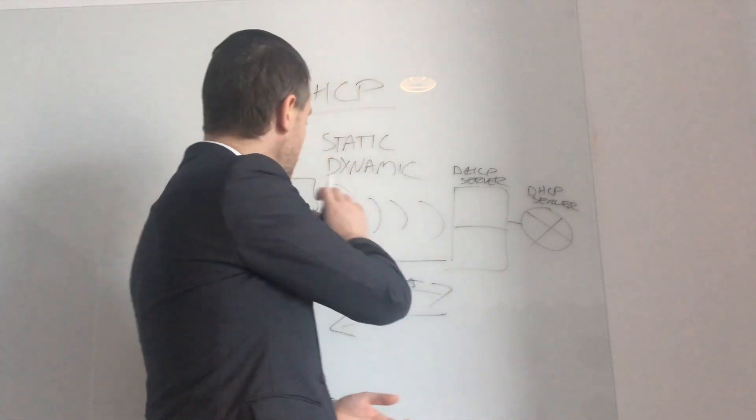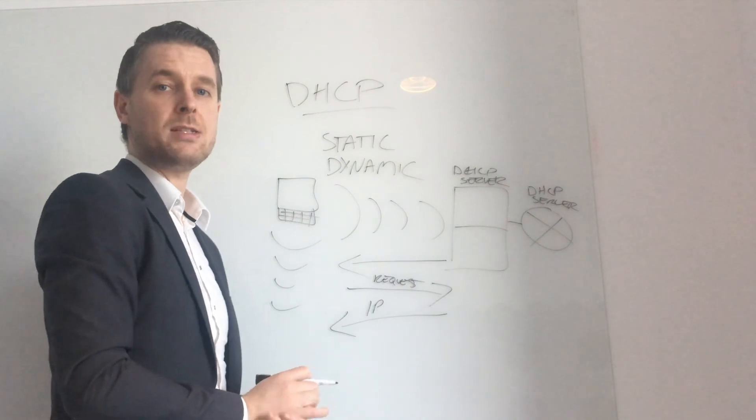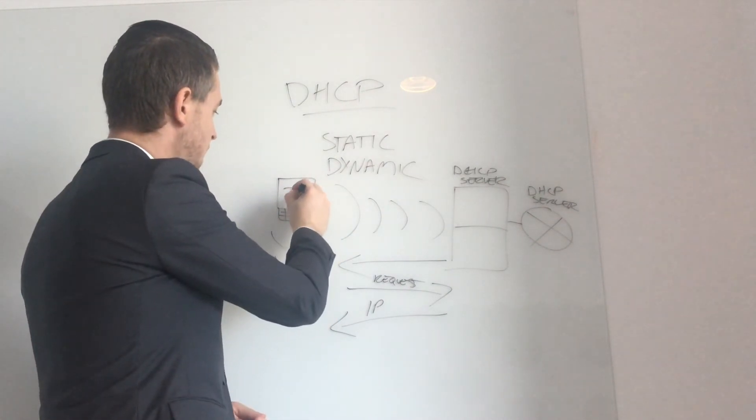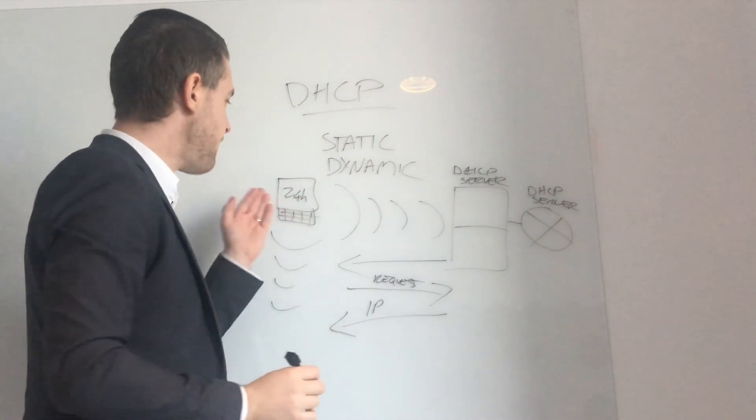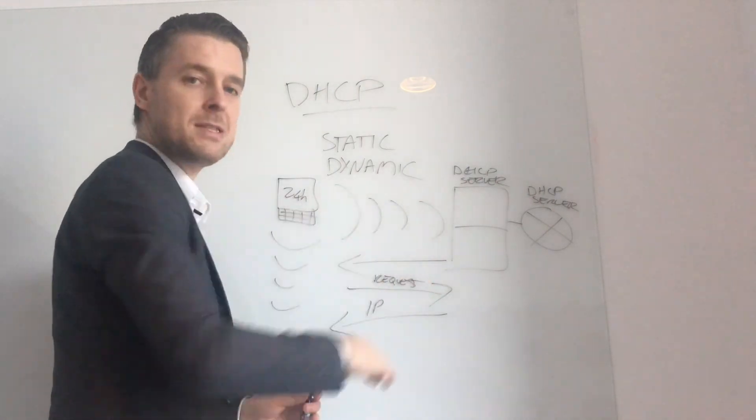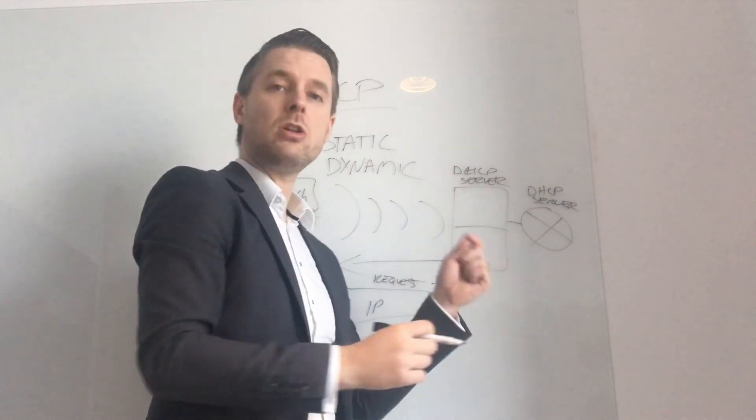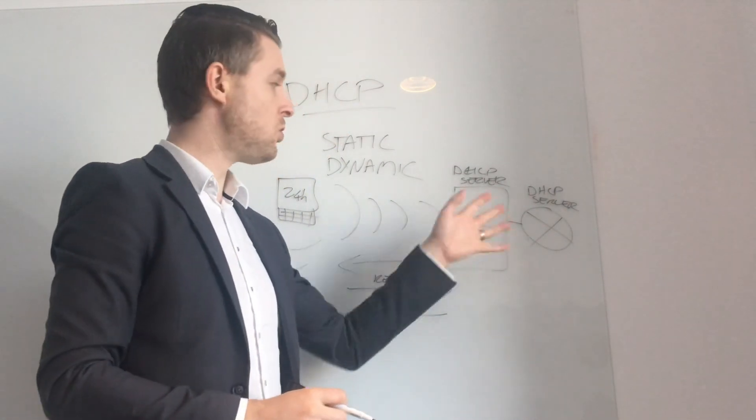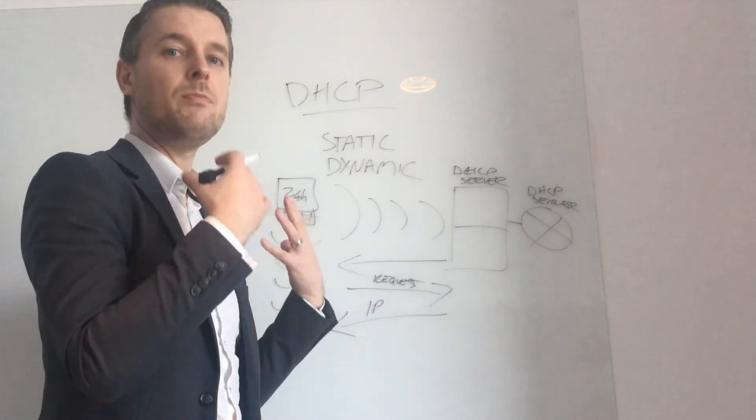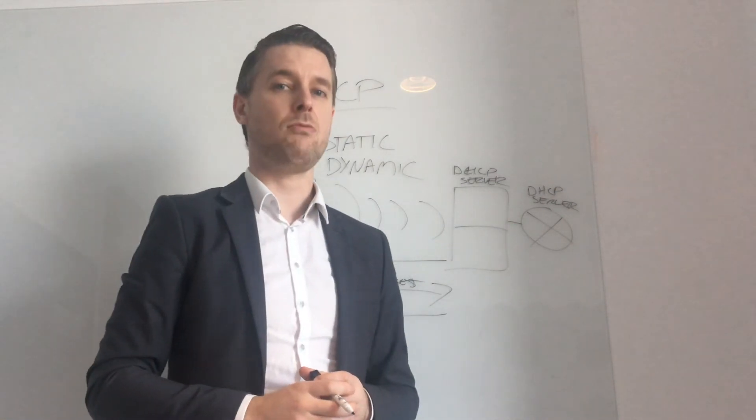So how long should this computer hold the IP address? For example, it could be 24 hours. And then after 24 hours, this thing happens again, and it will give it a new IP address. You can also lock IPs to computers all from your DHCP server as well, if you do want to go down that route.